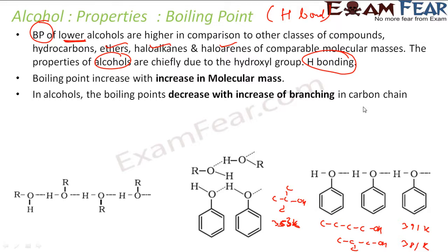Branching is inversely proportional to boiling point. When you increase branching, you decrease the hydrogen bond, and thus the boiling point decreases with increase in branching.